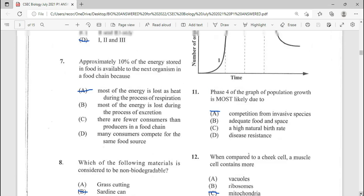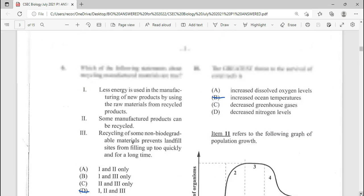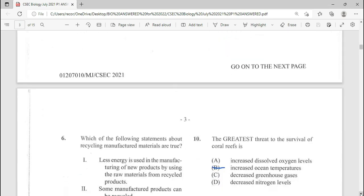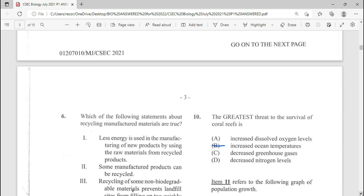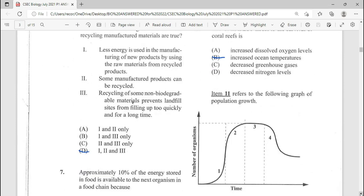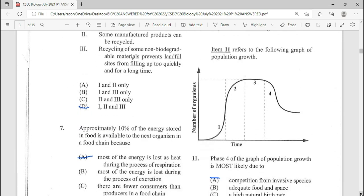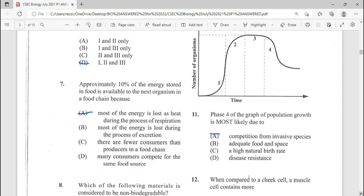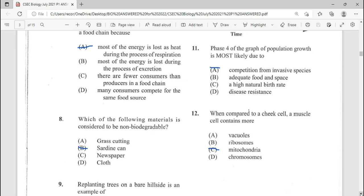We move on to question number 10. The greatest threat to the survival of coral reef is, of course, increased ocean temperatures. Eleven, repeated question. Phase four sigmoid growth curve of a graph of population growth is most likely due to A, competition from invasive species.